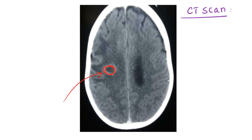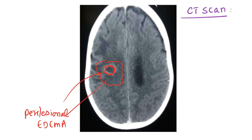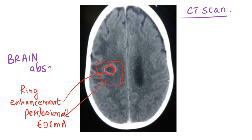Surrounding the lesion there is edema — what we also call perilesional edema. If you do a contrast CT, you will see that there is ring enhancement in this lesion. So the diagnosis in this particular case is brain abscess.